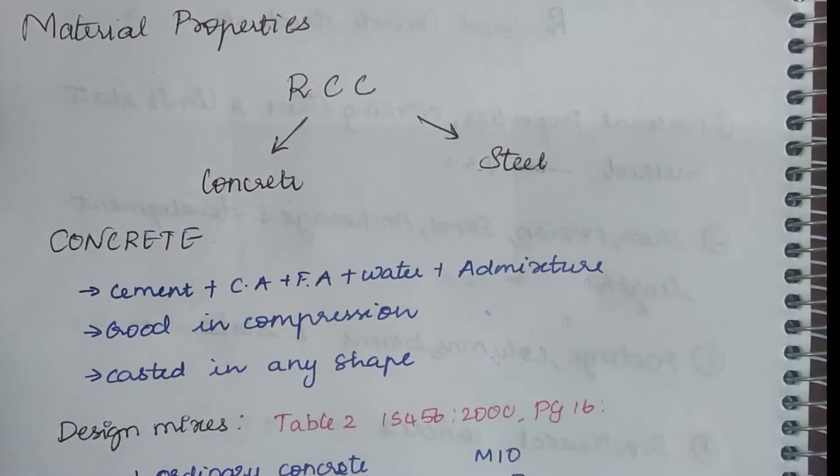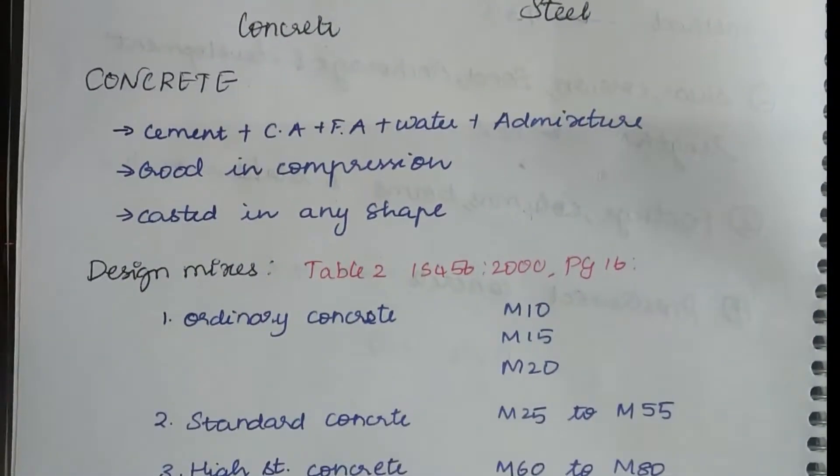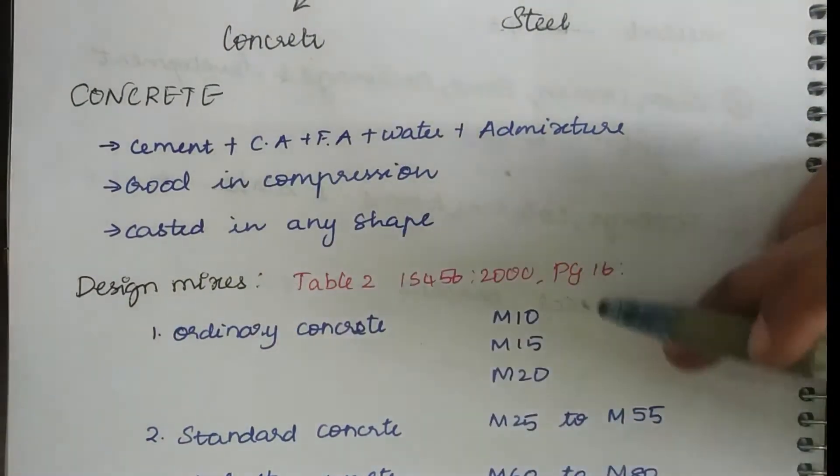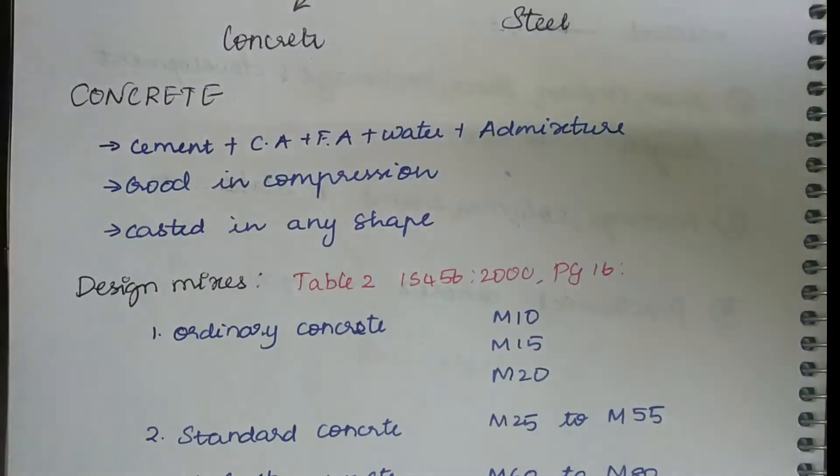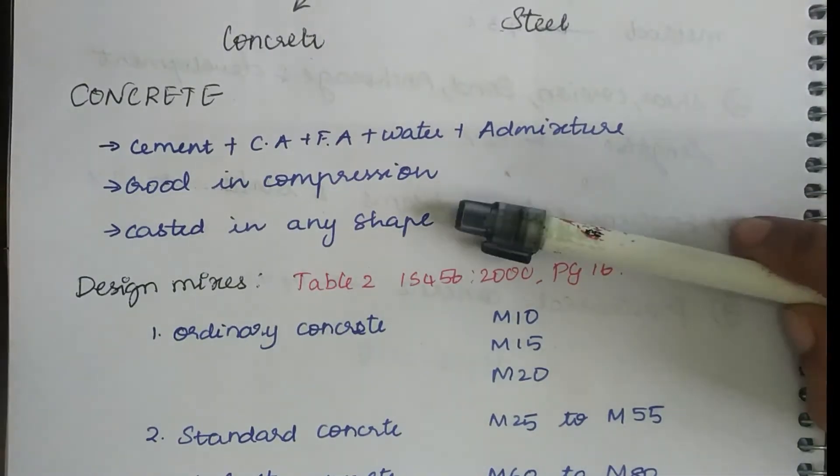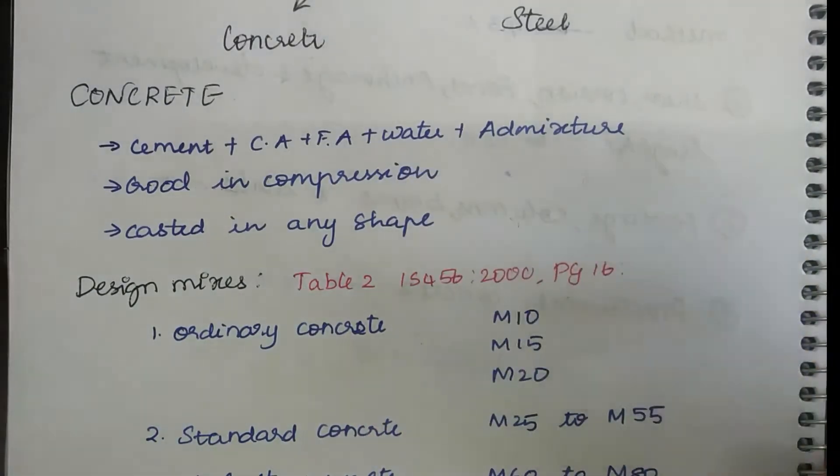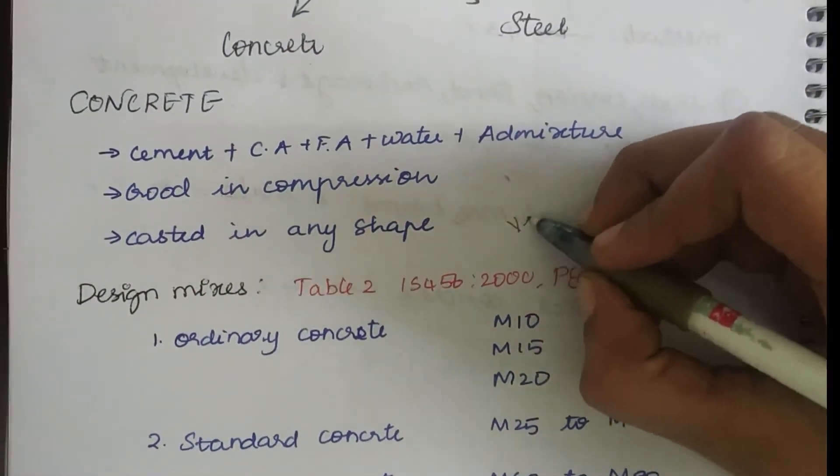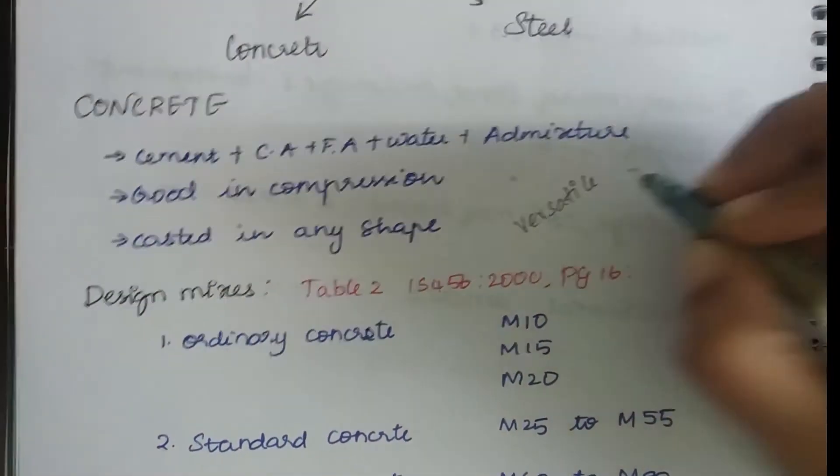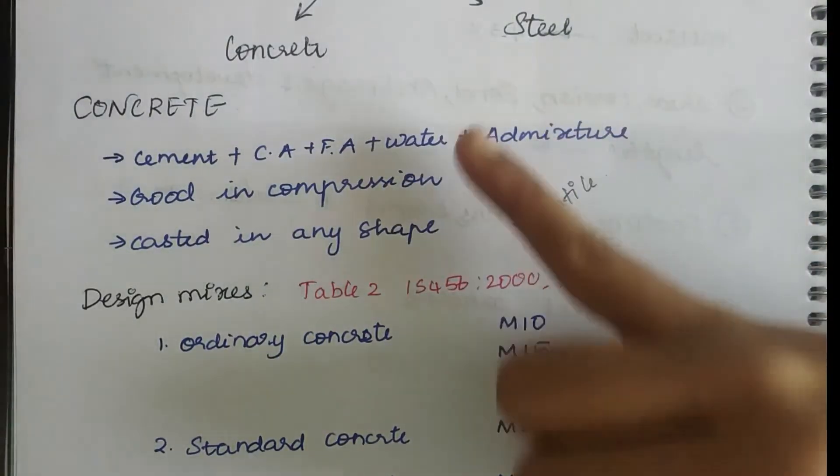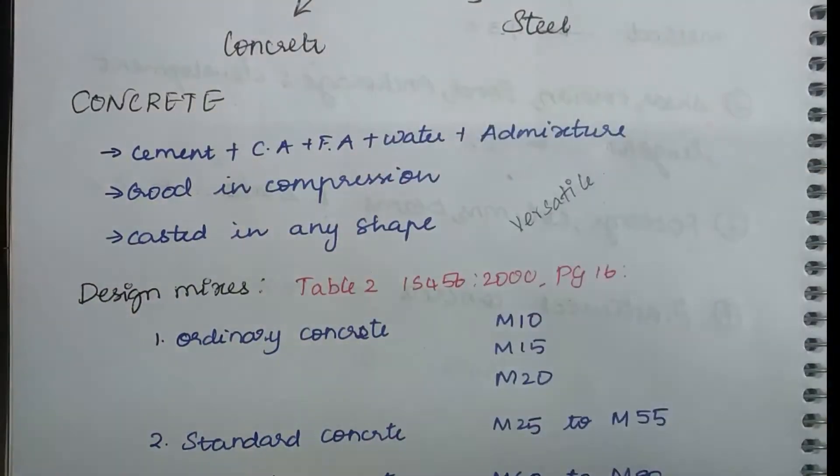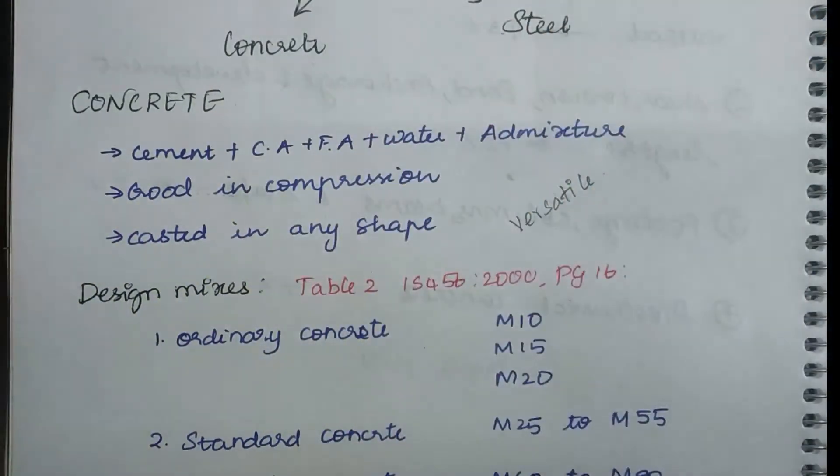We know that RCC is made up of concrete and steel. In this lecture let us look into concrete. Concrete is made up of cement, coarse aggregate, fine aggregate, water, and admixture. Concrete is good in compression but weak in tension, which is why we are adding steel. Next, concrete can be casted into any shape. This is one of the major advantages of concrete. Also, concrete is versatile, which means that concrete can be used anywhere in buildings, high-rise buildings, low-rise buildings, residential buildings, sewers, bridges, concrete pavers. It is used in so many places.